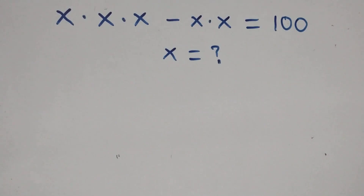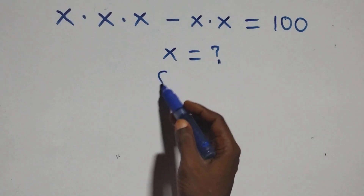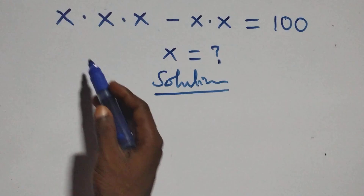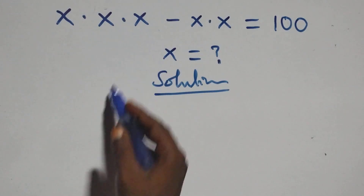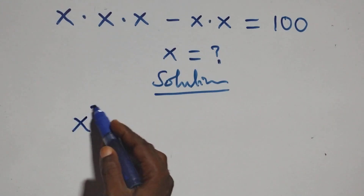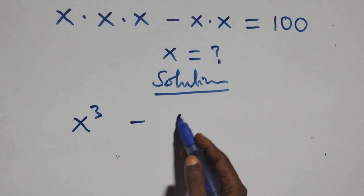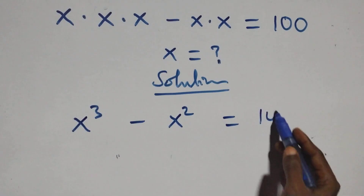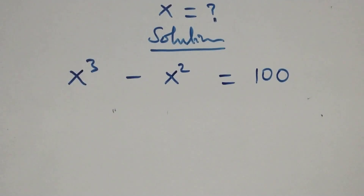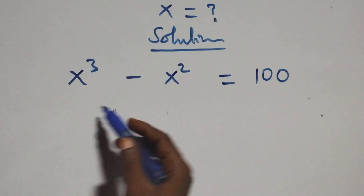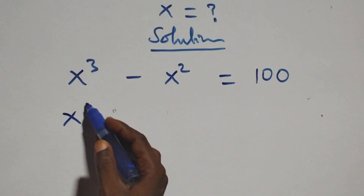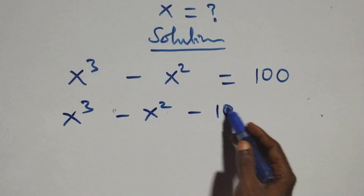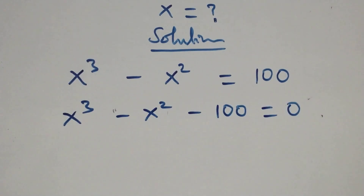Hello, you're welcome. Here we solve a nice algebraic equation. What we have here: we can multiply directly — x times x times x is the same as x cubed, minus x times x plus x squared equals 100. The next step: we take 100 to the left-hand side, so this becomes x cubed minus x squared minus 100 equals 0.